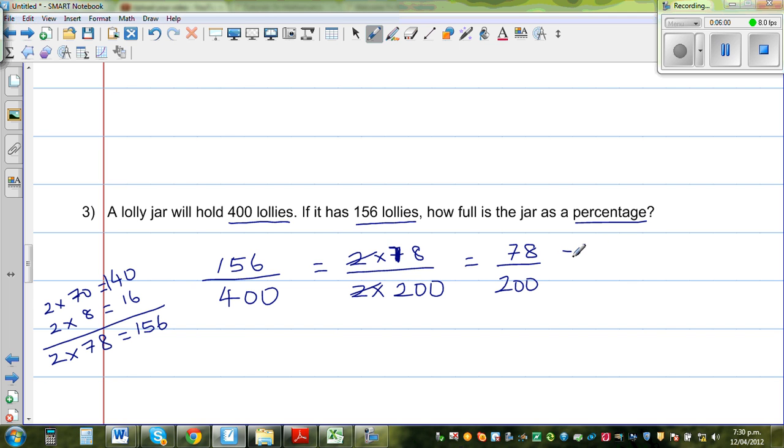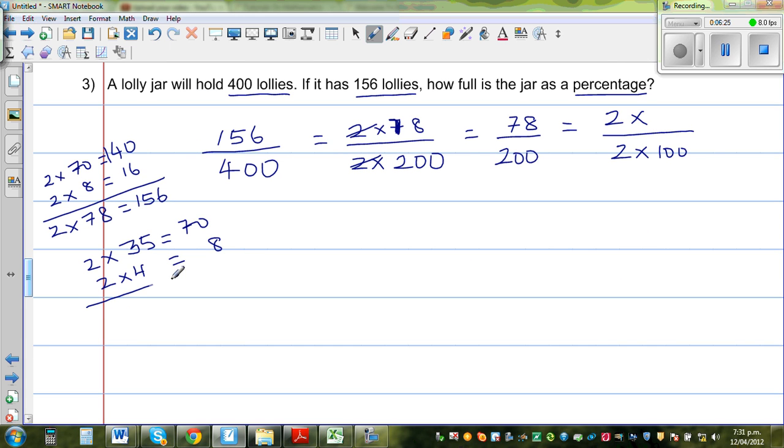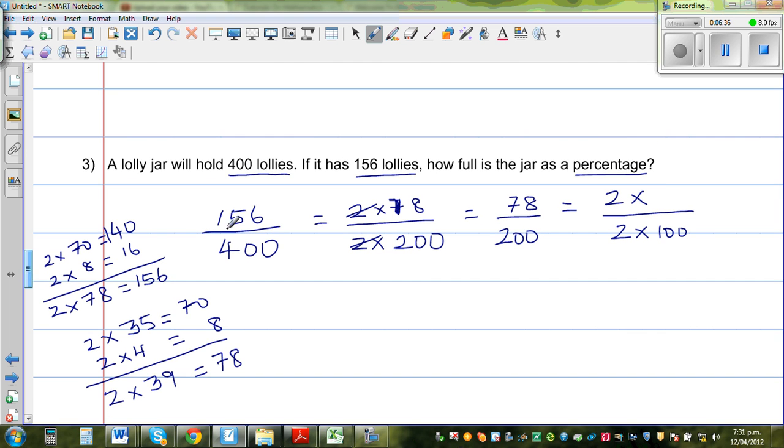And 78 again I can write as 2 times something. So it's 2 times 100. I know 2 times 35 is 70. I want an 8 now here, so 2 times 4 is 8. So this means 2 times 39 is 78. So this is how you should be thinking and working without calculators, because it helps you to think. So 2 times 39 is 78. So again 2 and 2 gets cancelled. So this is 39 out of 100, and that is nothing but 39%.